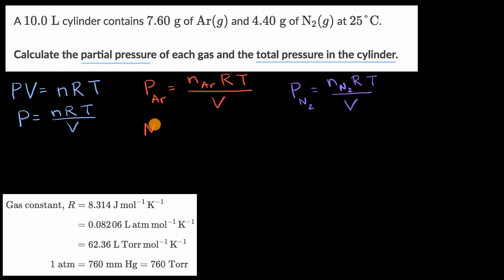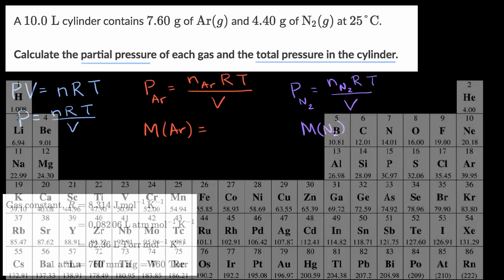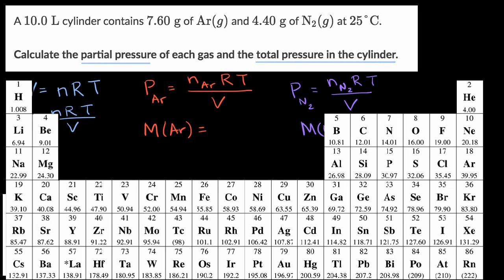Let's look up the molar mass of argon as well as the molar mass of molecular nitrogen. The molar mass of argon — looking at the periodic table of elements, we find argon — it has an average atomic mass of 39.95, which also gives us our molar mass.